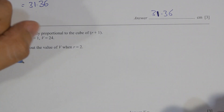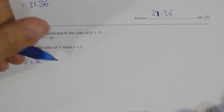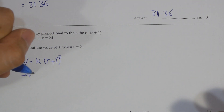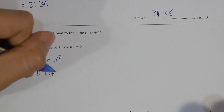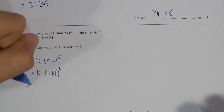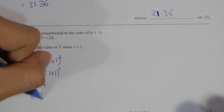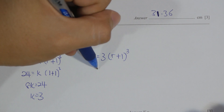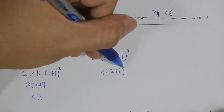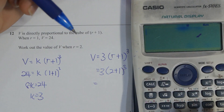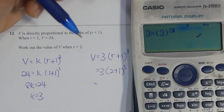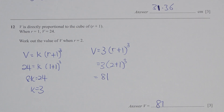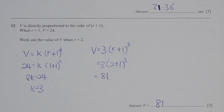For question 12, the keyword is directly proportional. V equals K(R + 1)Q. First, identify the K value, which is 3 in our case. Substitute it into the formula: V equals 3(R + 1)Q. Then substitute 2 into R's position, and you get 81 as the final answer.